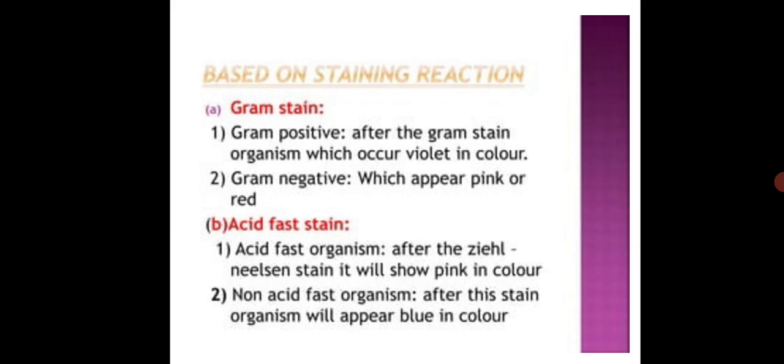Based on staining reaction: Gram staining - Gram positive after the gram staining organism which occur violet in color, Gram negative which appear pink or red colors. Acid-fast organism after the Ziehl-Neelsen stain will show pink in color, Non-acid fast organism after the stain will appear in blue color.